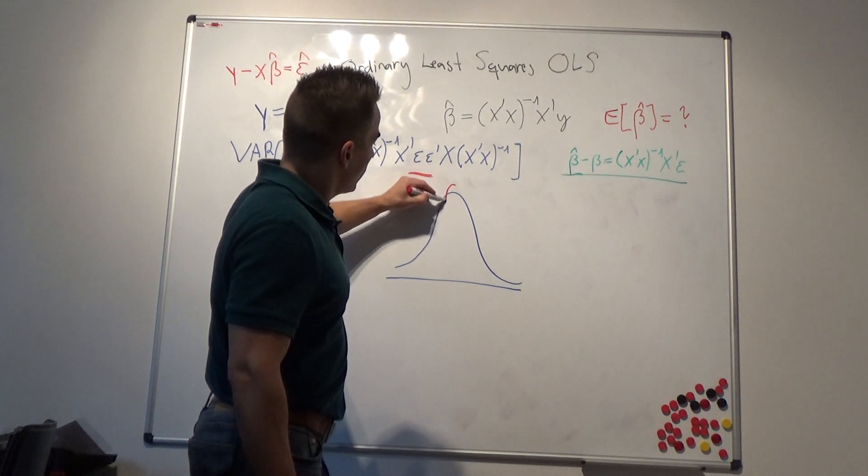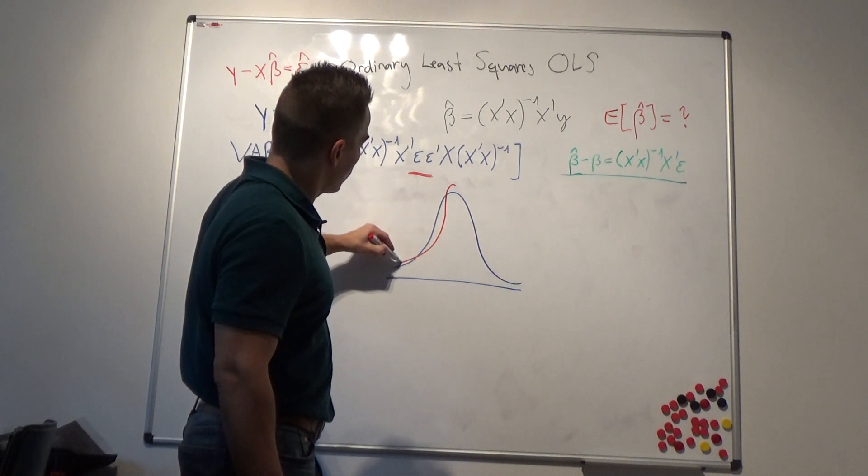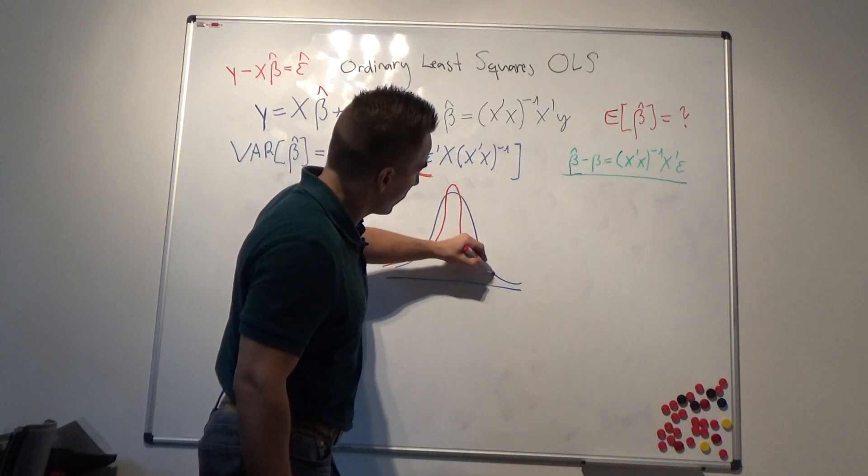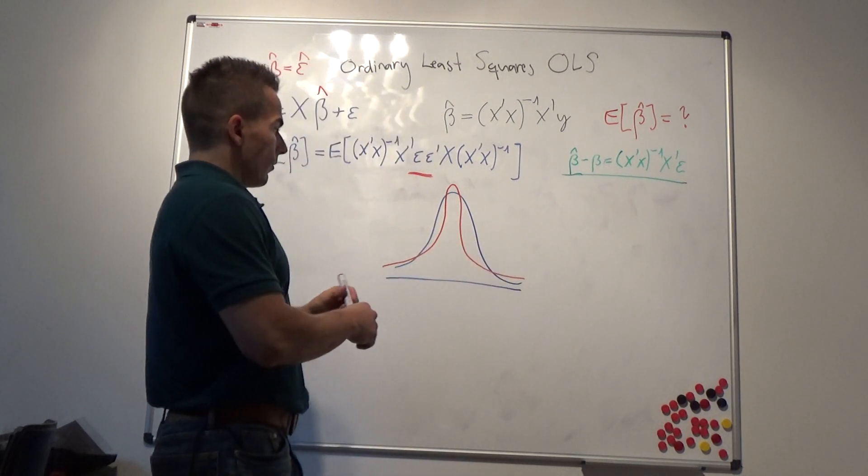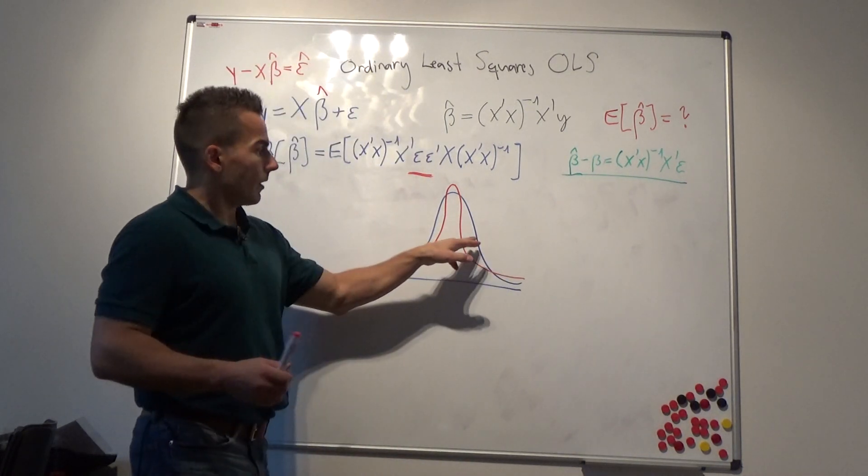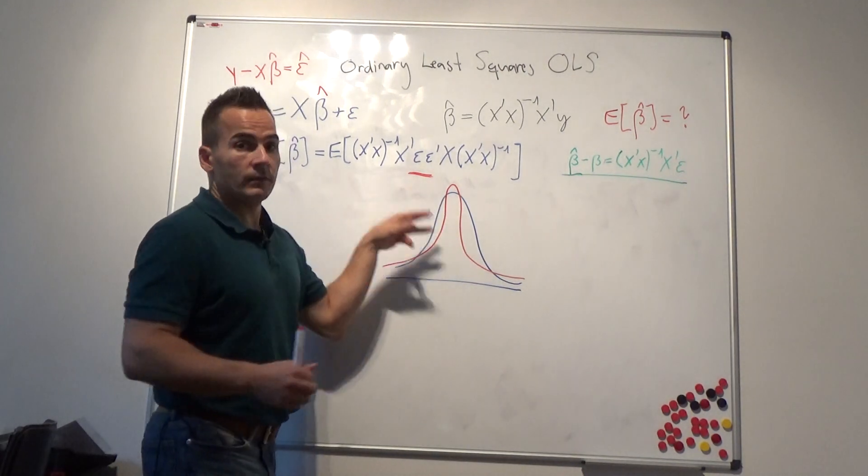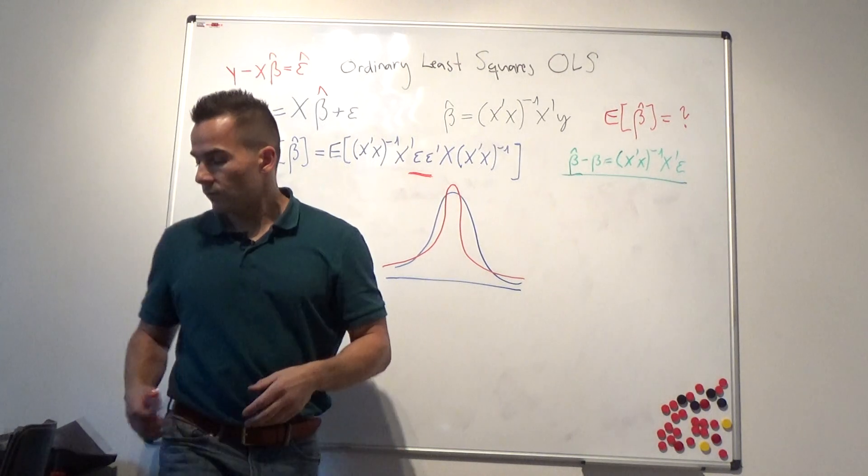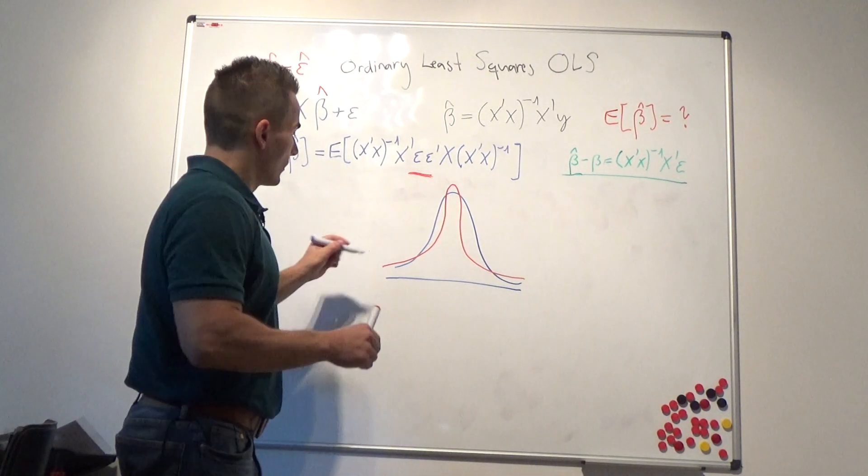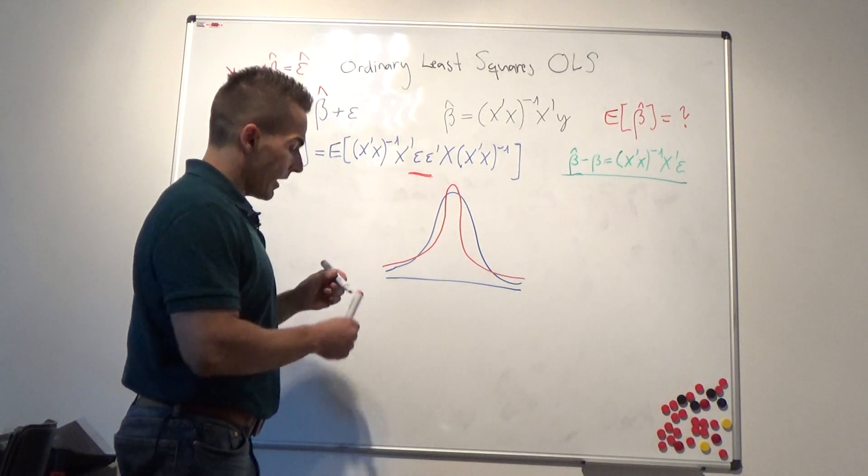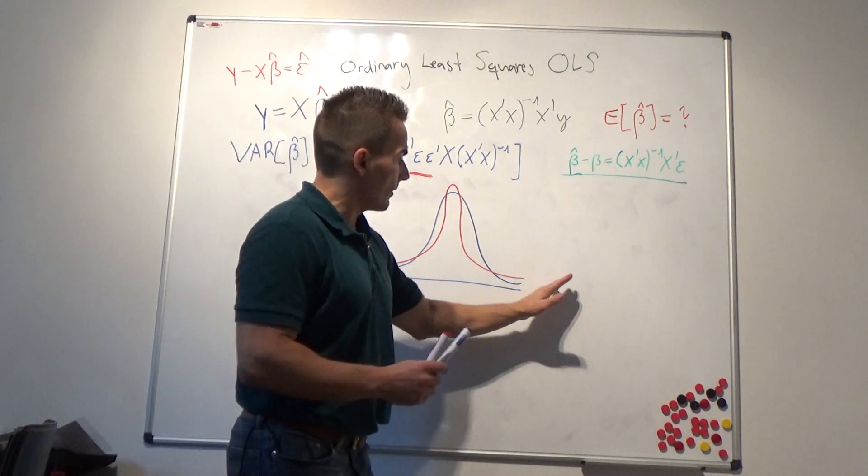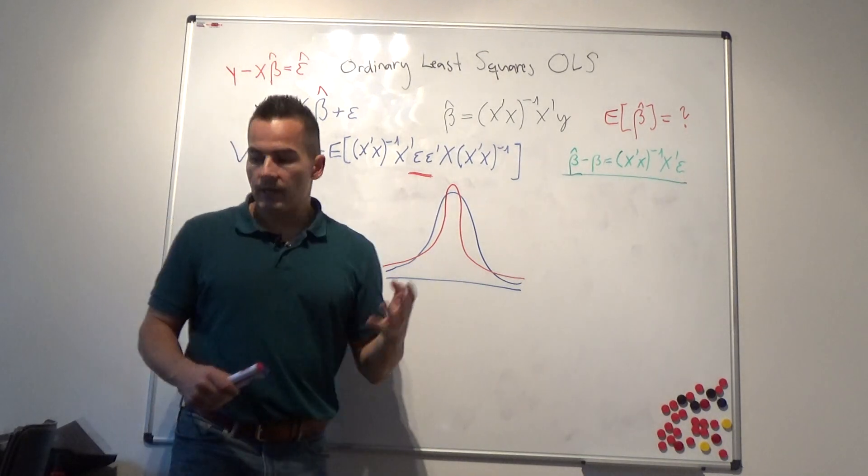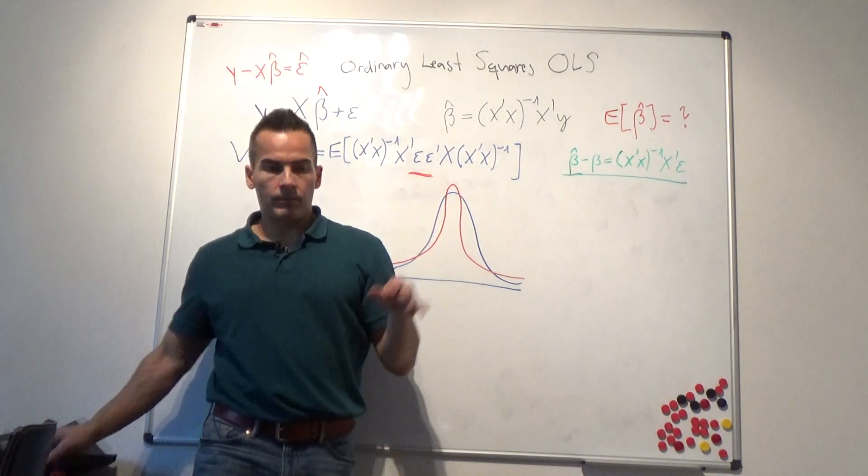Which means it maybe looks a little bit like this. So if the blue bell-shaped curve is normally distributed, the red one is fat-tailed, so-called fat-tailed. So what you see is you have more probability mass in the extremes.